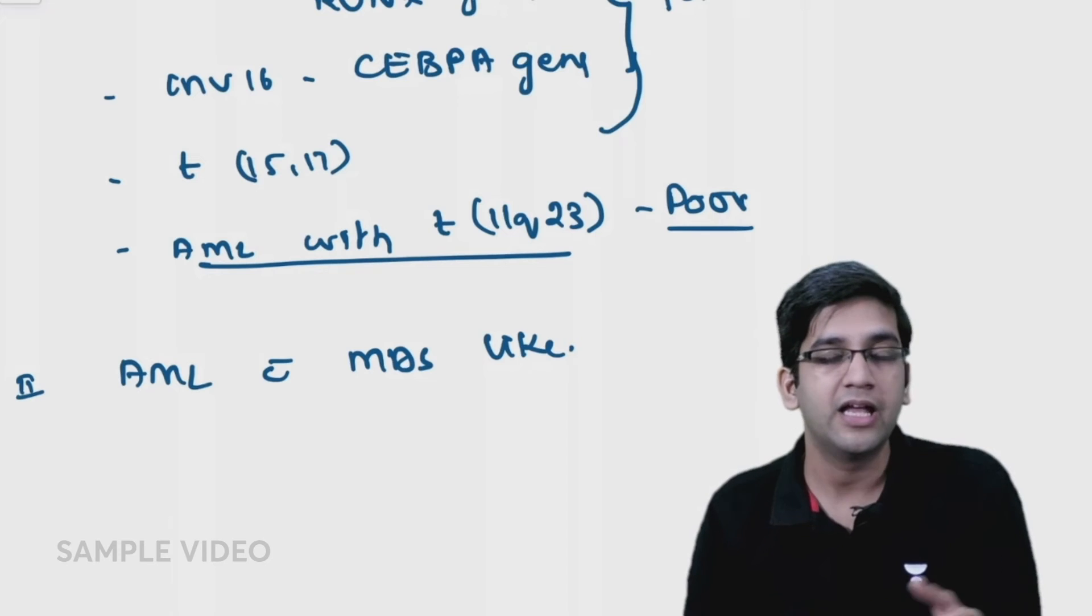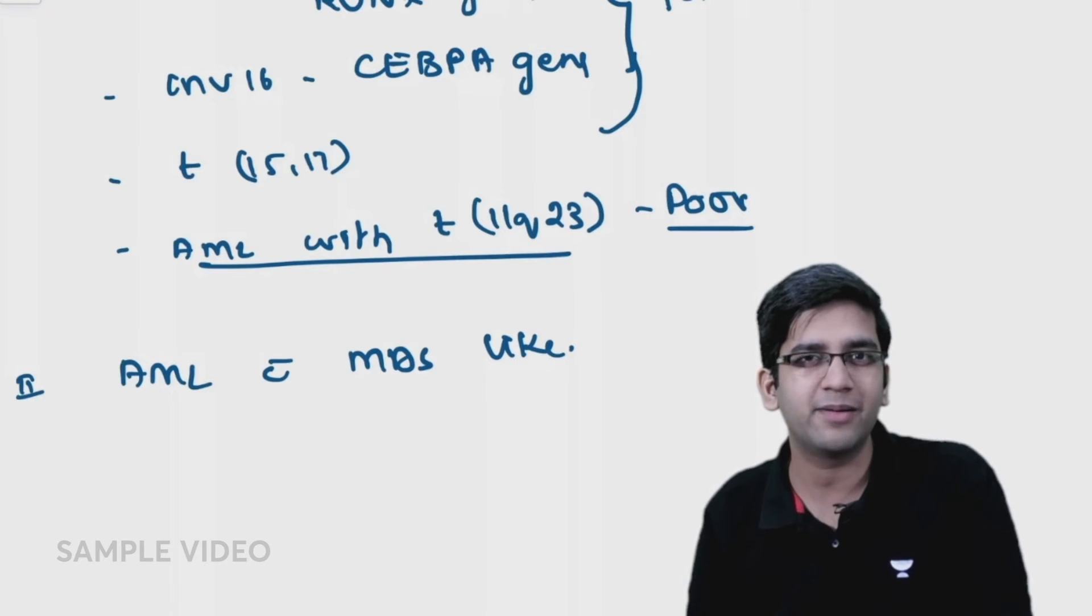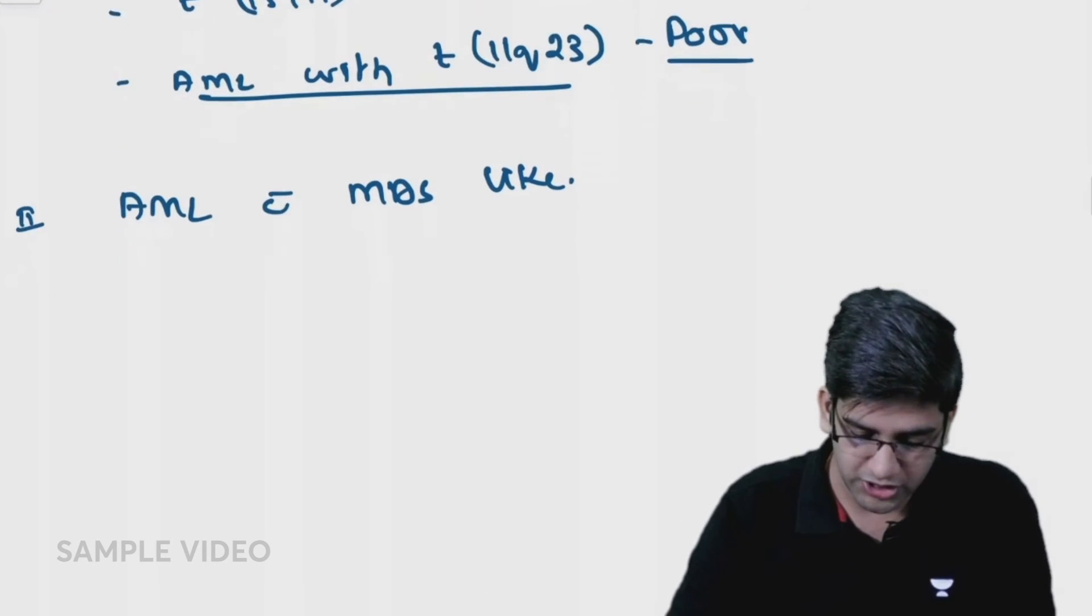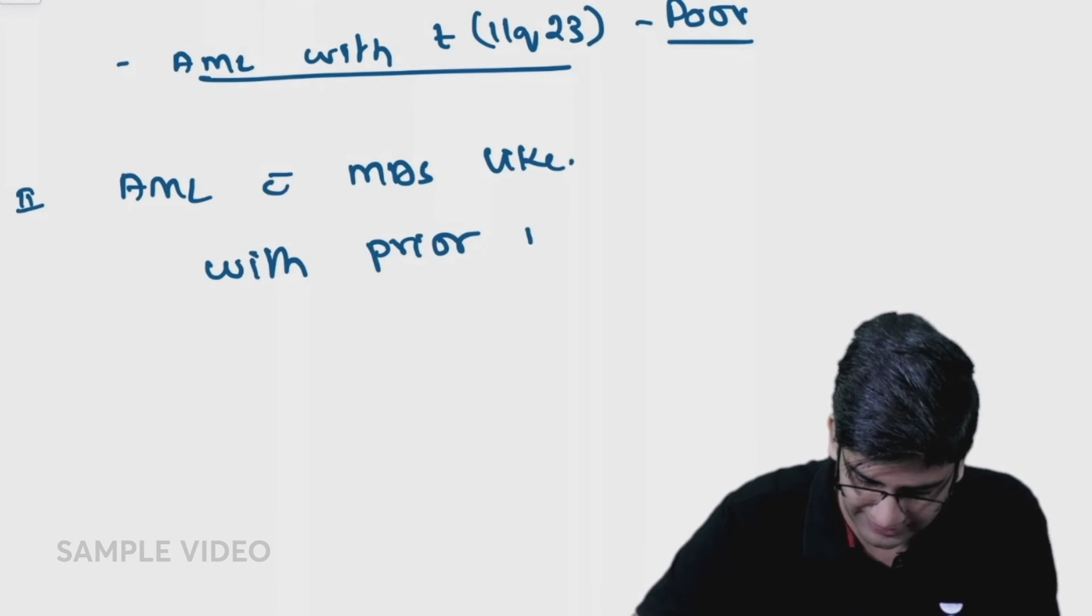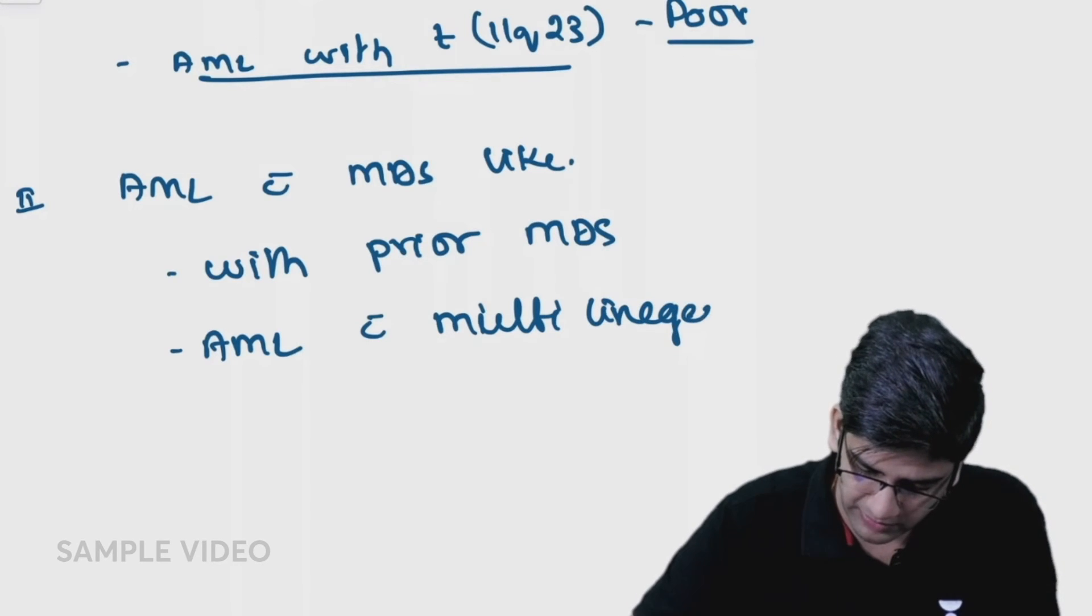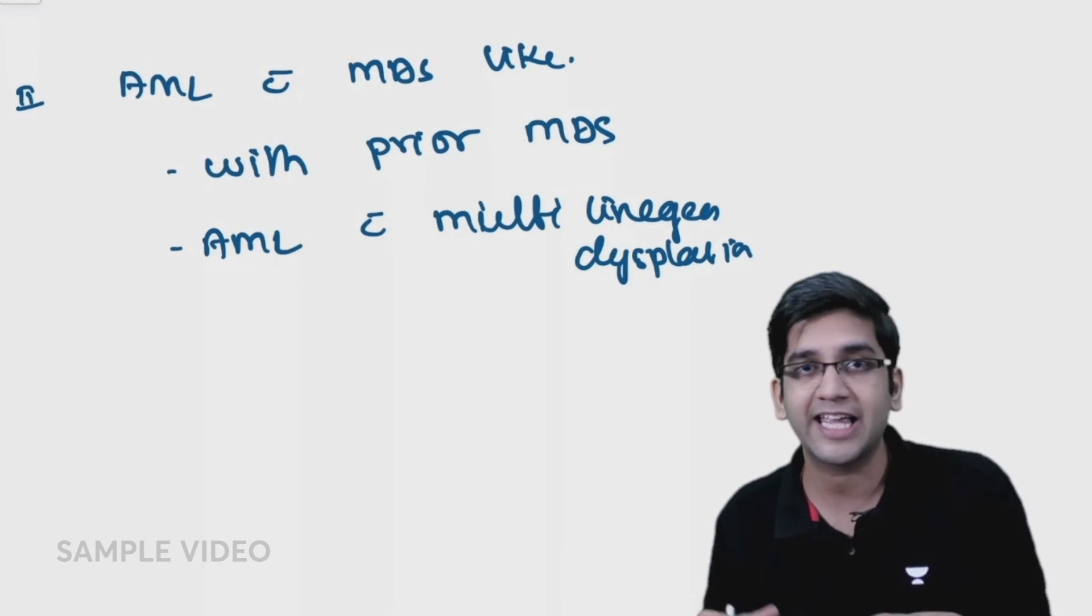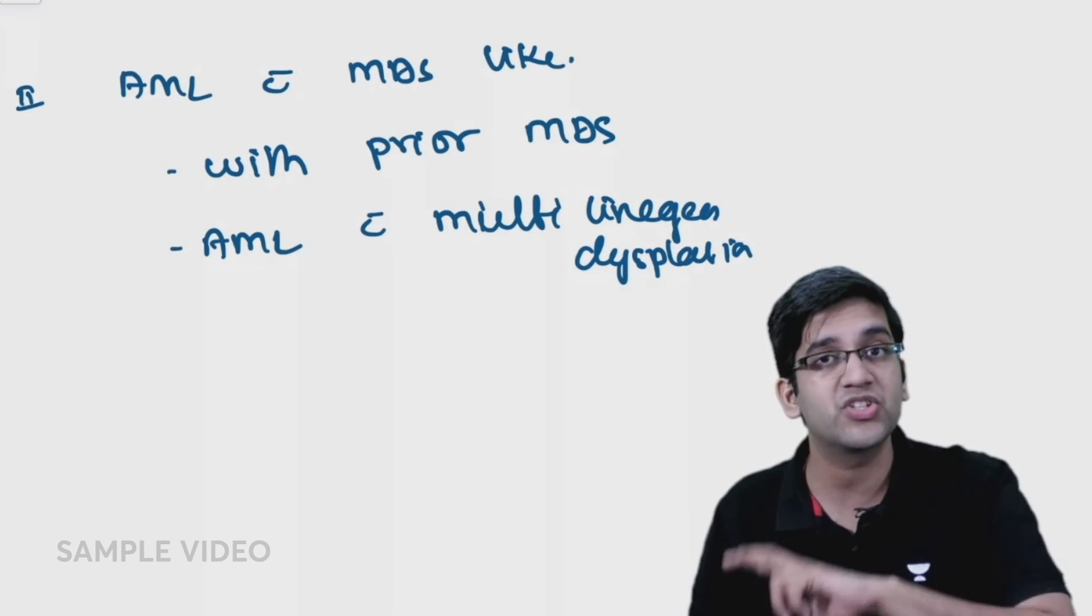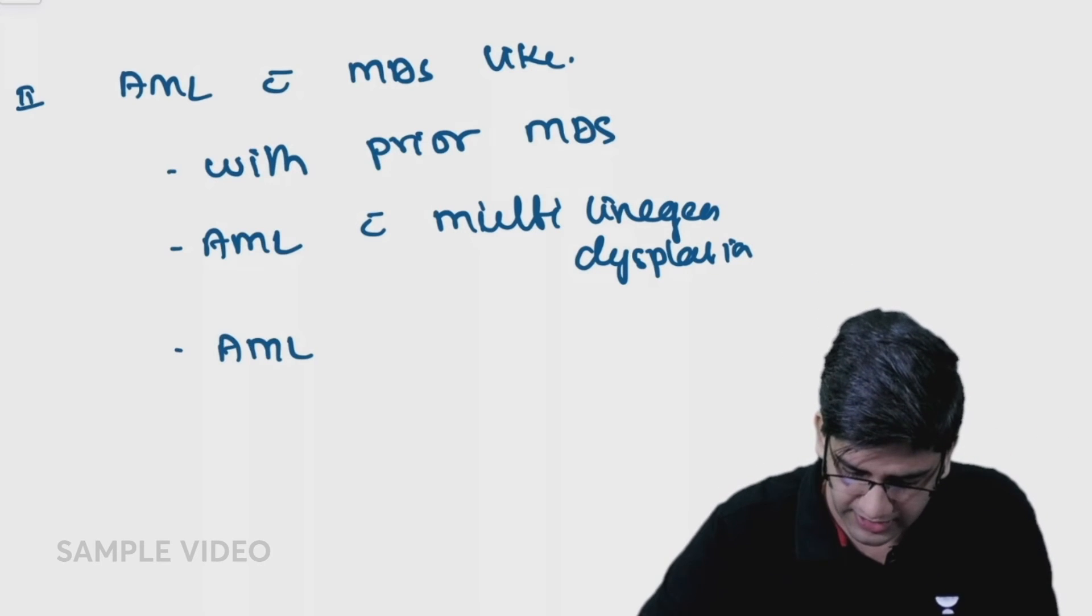Can an MDS progress to AML? It can. Can an AML have dysplasia in other lineages? Let's say I'm having AML in granulocyte lineage, can erythroid become abnormal? It can, because everything comes from common myeloid progenitor. AML with MDS-like features means prior history of MDS that transformed to AML, or I have AML with multi-lineage dysplasia.